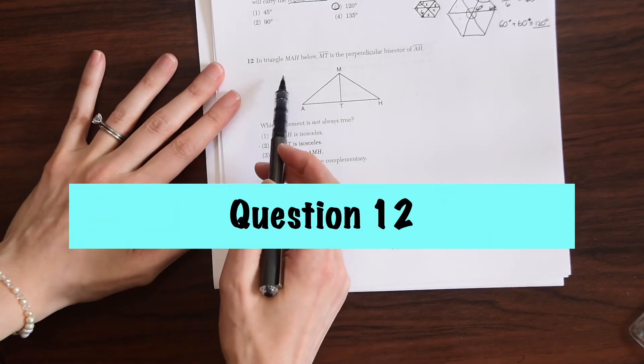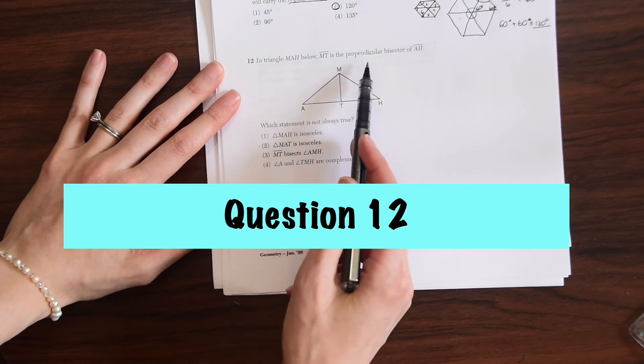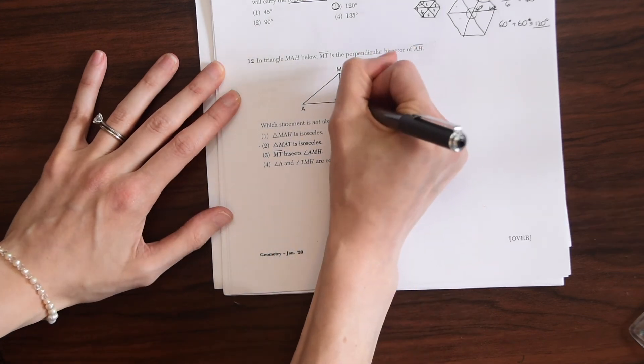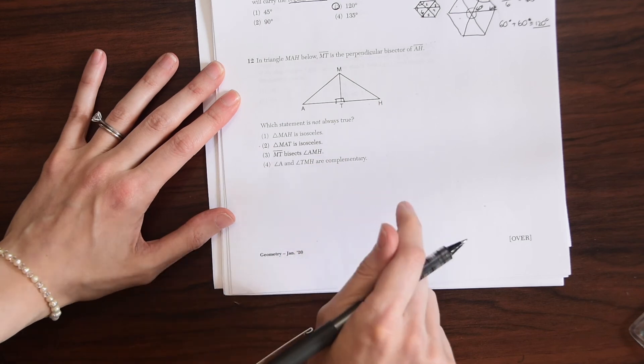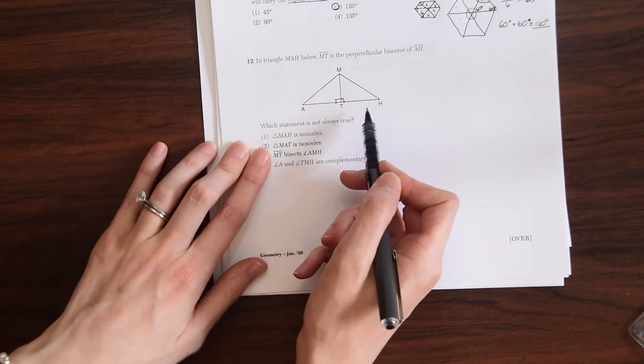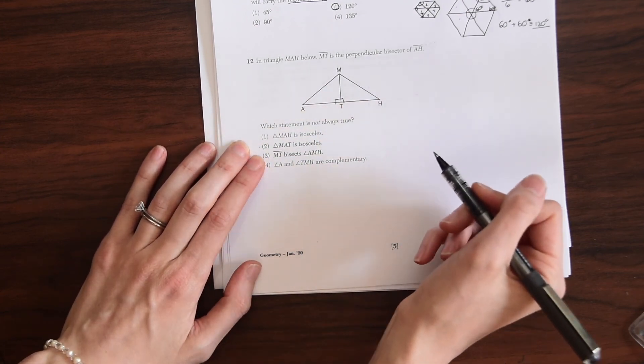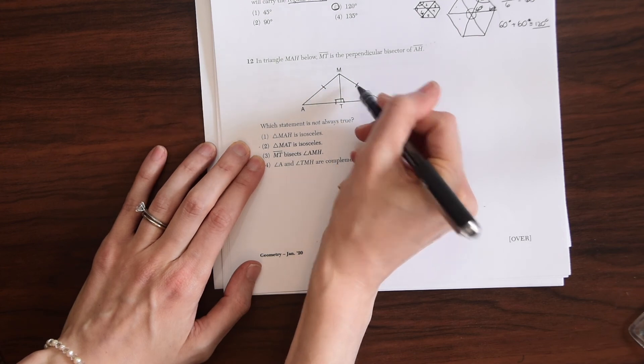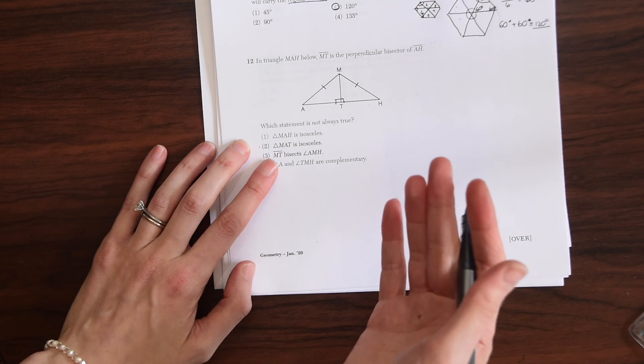Number 12, in triangle MAH below, MT is perpendicular, is the perpendicular bisector of AH, which statement is not always true. So MAH is isosceles. That looks correct. MAH is isosceles, right? Because these two sides are equal and we have this perpendicular bisector splitting it in half.